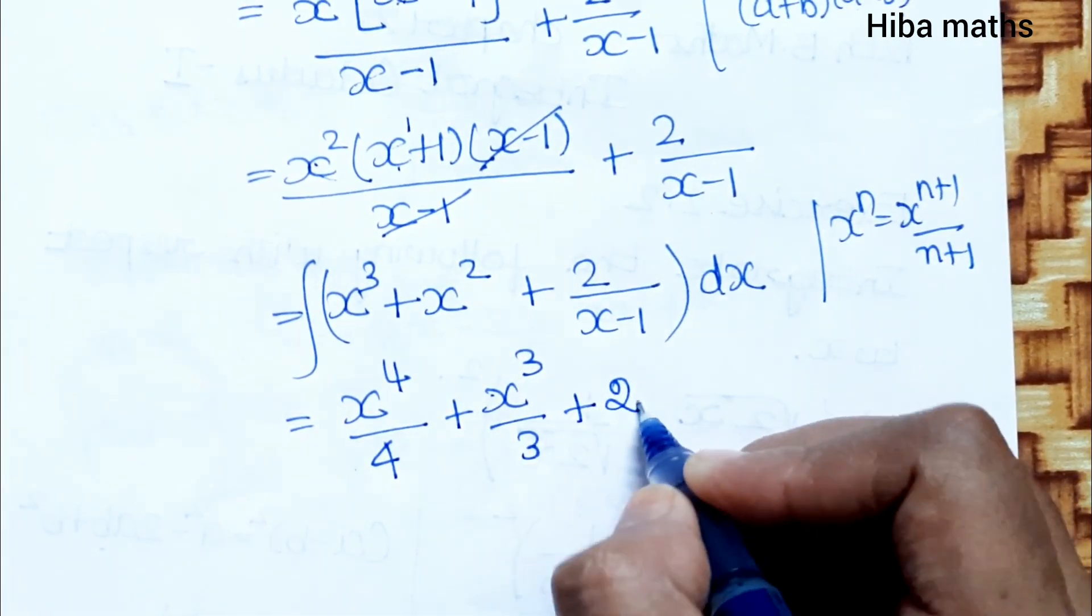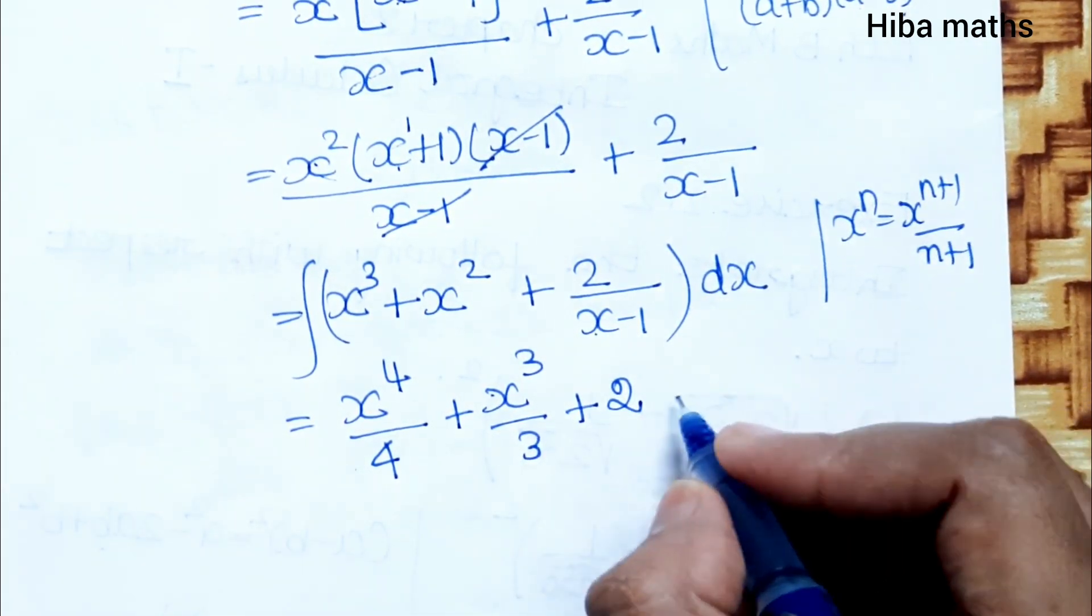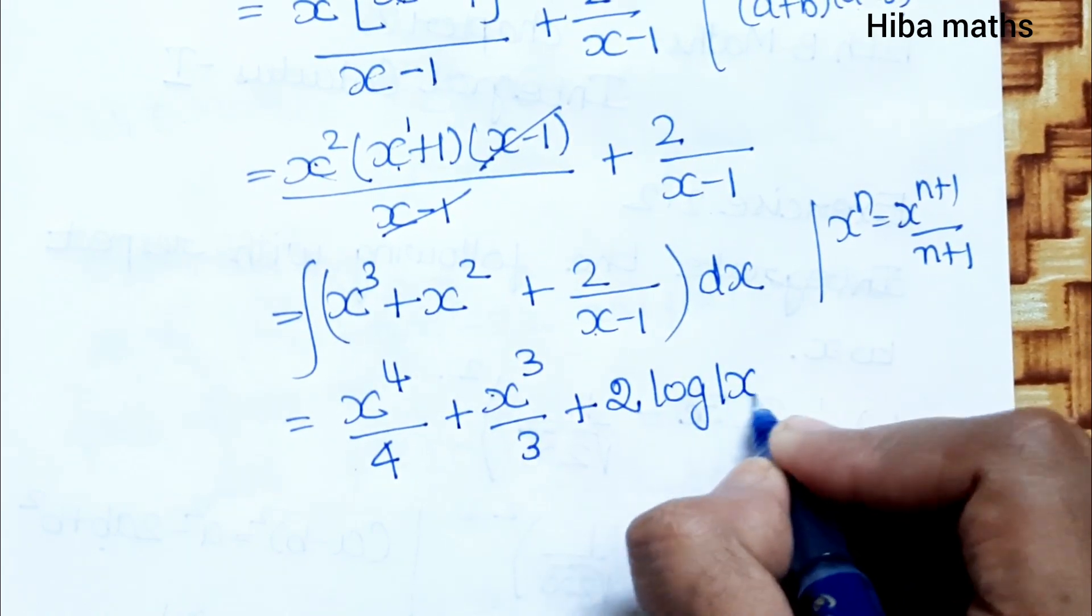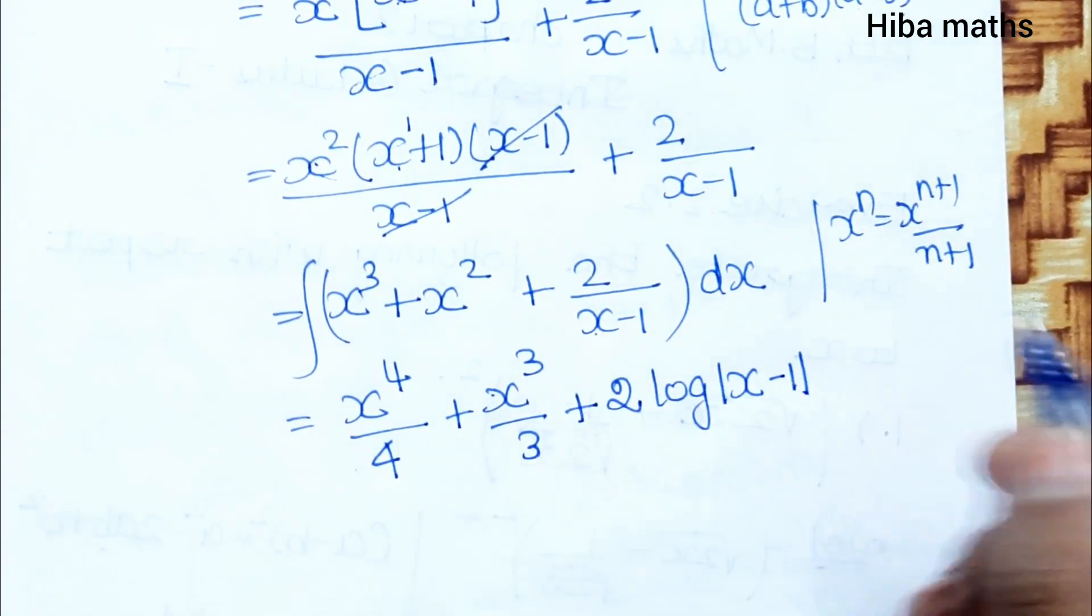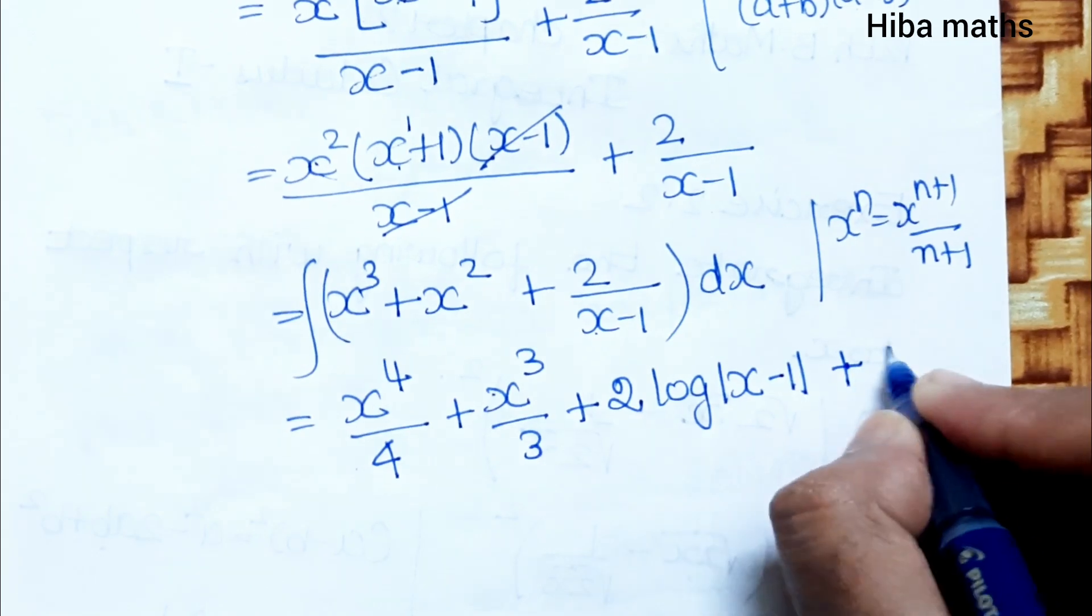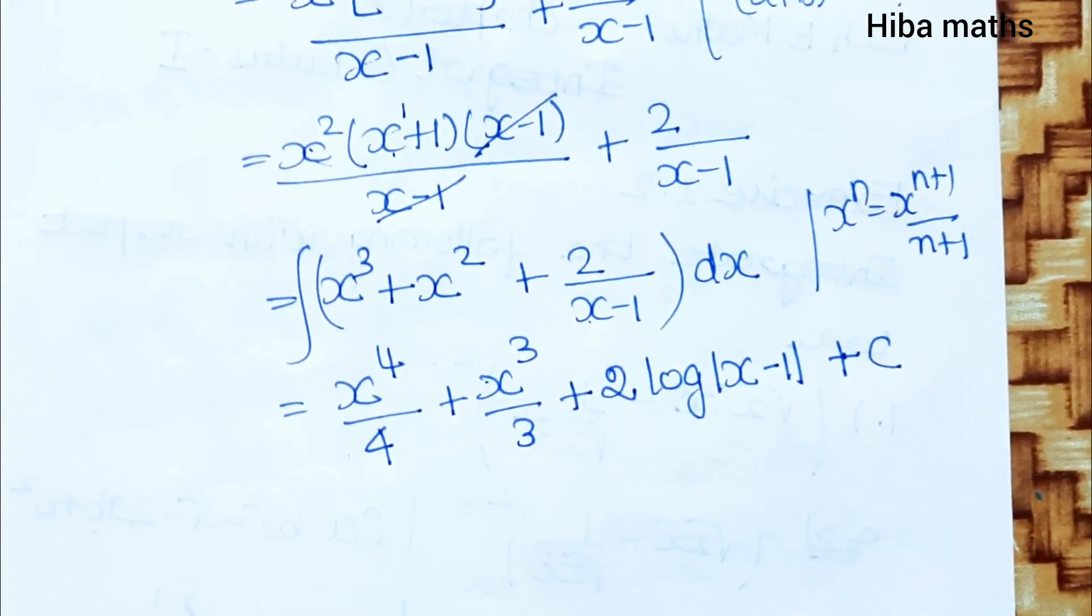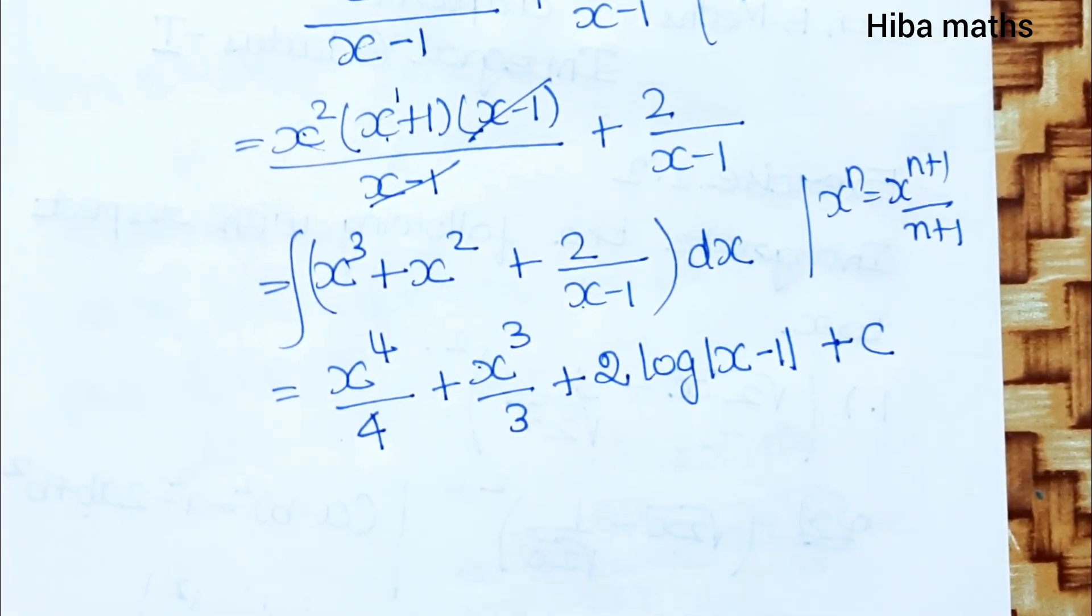How do you integrate 1/(x - 1)? It's log of modulus |x - 1|. The coefficient 2 gives 2 log|x - 1| plus C. And this is our answer. If you have any doubt, mention in the comment section. Thank you so much for watching.